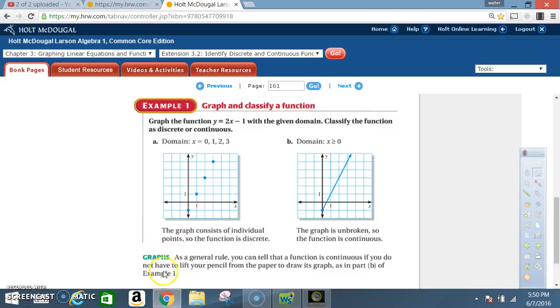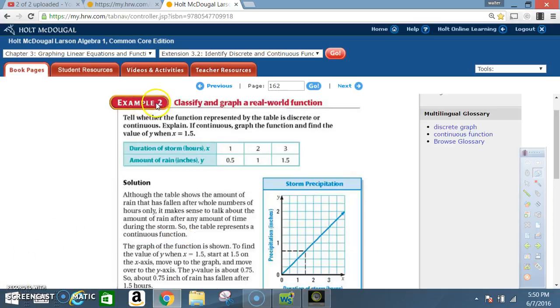Example 2: Classify and graph a real-world function. Tell whether the function represented by the table is discrete or continuous. Explain. If continuous, graph the function and find the value of y when x is 1.5.